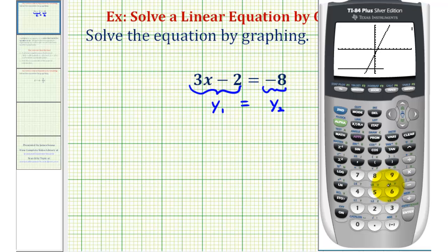So there's y1, there's y2. The x-coordinate of the point of intersection will be the solution to our linear equation. To calculate this point of intersection, we'll press second trace, option 5 for intersection. And now we can just press enter three times.